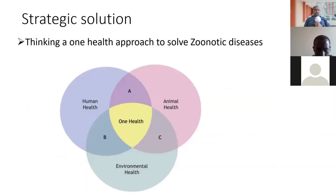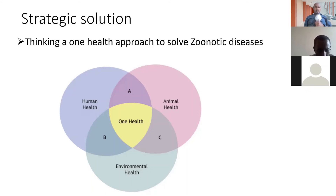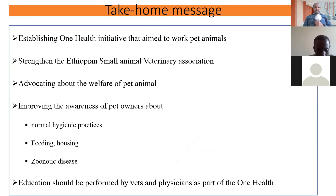What could be the possible solutions to combat these zoonotic diseases? The best solution is thinking with a One Health approach. As you all know, One Health is a multi-disciplinary approach where different professions are involved, focusing on the human, animal, and environment interface. With this approach, it would be possible to address zoonotic diseases — otherwise we cannot reduce the prevalence or incidence of these diseases without such approaches.